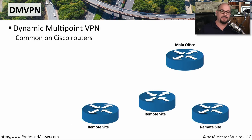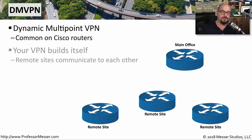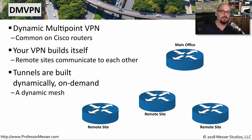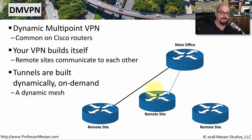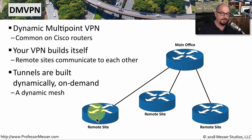A popular Cisco WAN technology is DMVPN, or Dynamic Multipoint VPN. It's something you commonly find on Cisco routers, because you can connect your network and have it decide when and where it would like to connect to other locations. You're effectively having all of your sites build their own VPNs as needed. The tunnels are built dynamically and on demand, depending on what location needs to speak with another. For example, it would be very common to have a main office and multiple remote sites. If one remote site wanted to talk to another, they would normally have to communicate through the main office and then back down to the remote site.